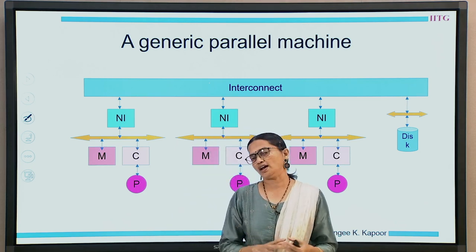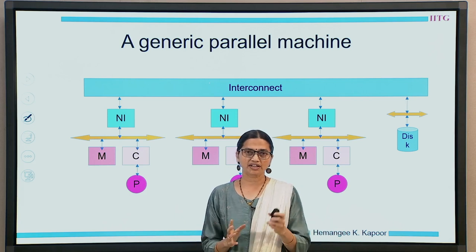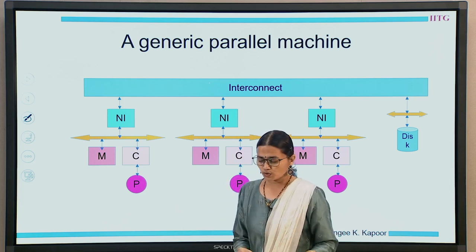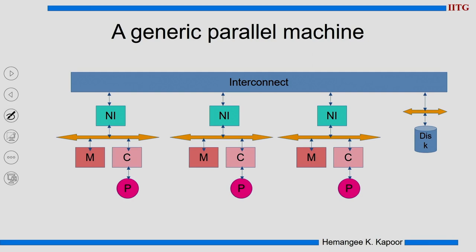Every node has a processor, its own cache, and maybe some memory associated with it. This is how a general machine would look like — you have the interconnect, and here I have shown 3 nodes; also the disk is connected, maybe more IO devices and so on. We have been learning snooping cache coherence up to the previous module, where we discussed that all these nodes would snoop on the interconnect to understand what activities, what read/writes are going on, and whether each node should take any action.